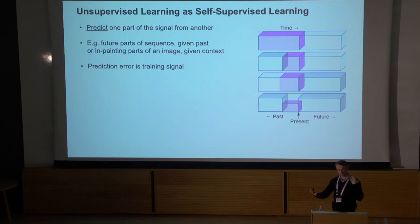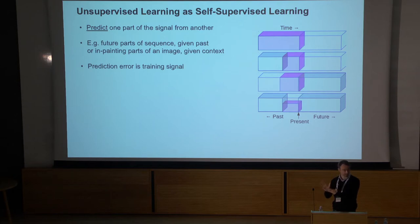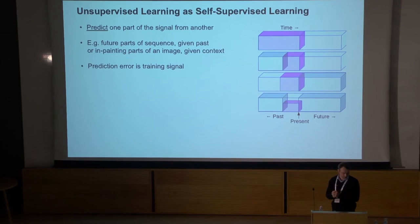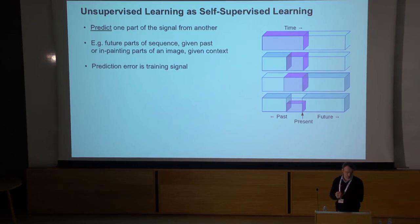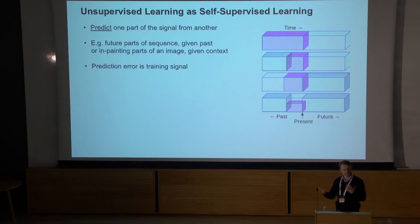The idea is that the predictions your model makes — you can compute the difference between those predictions and what actually happened in the future frames — gives you an error signal you can use for training. This is a fairly natural paradigm; some folks in the machine learning and vision communities call this self-supervised learning.